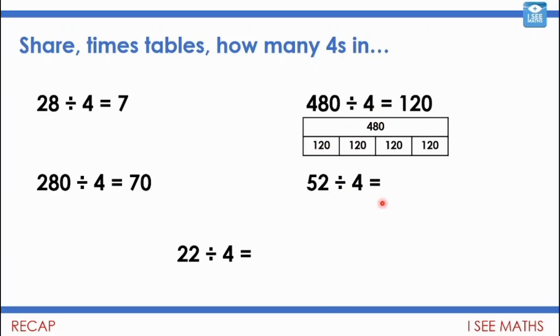Whereas 52 divided by 4, I probably do that in a slightly different way. Again, I might not know that as a times table fact, but there, I'm thinking, well, how many 4s are there in 52? Now, to work that out, I would tend to split up the 52 into 40 and 12. I know there's 10 fours in 40, 3 fours in 12, so in total, that is 13 fours in 52.